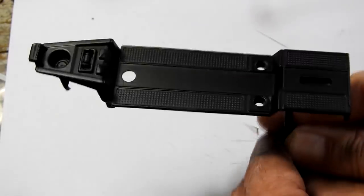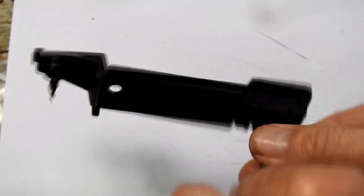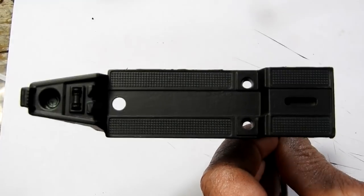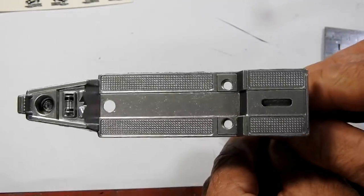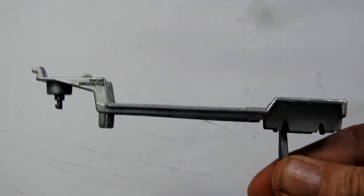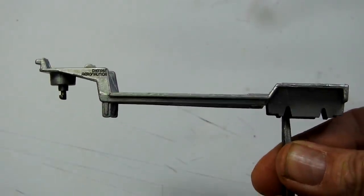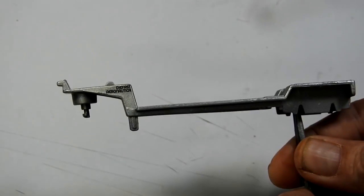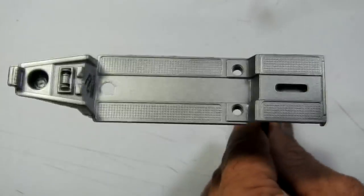I hit the trailer with some black primer, followed by dull aluminium. Then I added a couple of little logo decals to the trailer. I finished that with a semi-gloss varnish.